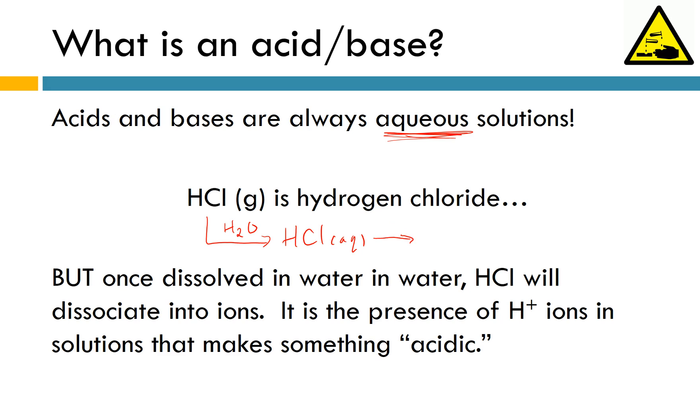And what makes hydrochloric acid actually acidic is that this compound is going to break apart or dissociate into ions. Specifically, an acid is something that's going to produce H+ ions in solution. In future lessons, we'll talk a little bit more about definitions of acids and bases. But for the time being, we're going to go with the presence of H+ ions makes a substance acidic.